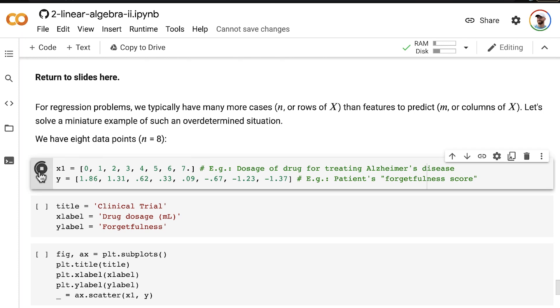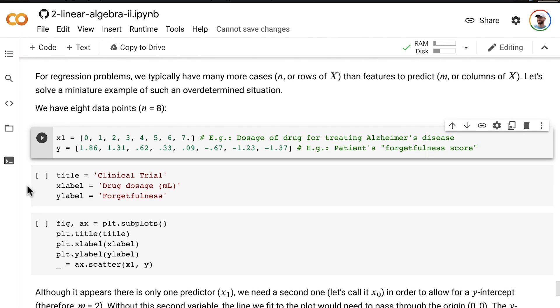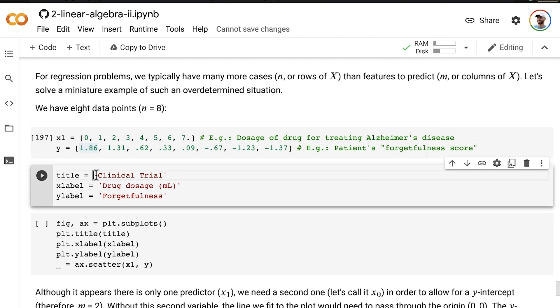In this situation, we have eight data points. I've completely made these data points up. We have this input, which we'll call X1, which is a dosage of a drug that treats Alzheimer's disease. Let's say milliliters of drug dosage. You administer zero milliliters as a control, or one, two, three, four, five, all the way up to seven milliliters of this Alzheimer's drug. And then our outcome that we're measuring is the forgetfulness of the patient on some test of forgetfulness. I'm just making this stuff up for the sake of an example. We'll create some labels for our plot. We'll call this a clinical trial. Along our x-axis, we'll put the drug dosage. And along our y-axis, we will put the forgetfulness.